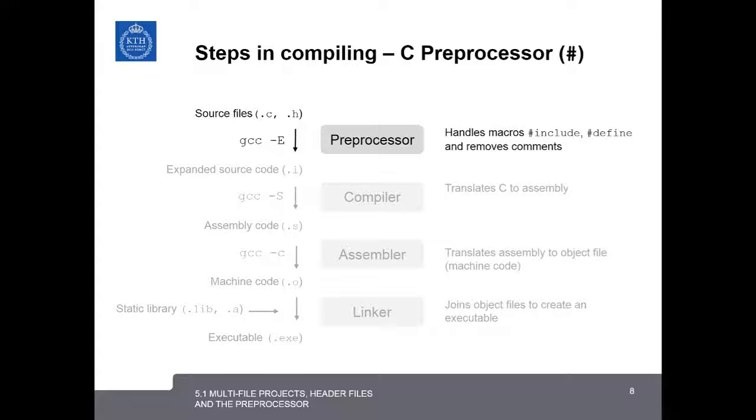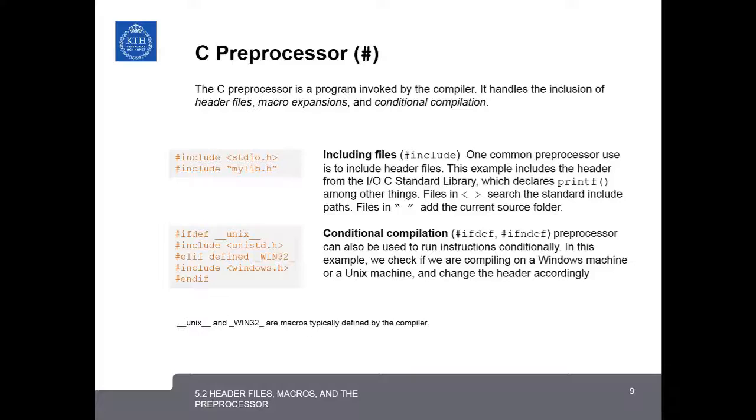If you recall from earlier lectures, the first step in the compilation process is the C preprocessor. The C preprocessor is very important to think about when we're talking about header files, because it's the part of the compilation process that includes header files into the source code. Anything that you see in a .c file or .h file with a hash symbol or pound, like you see here, is a preprocessor command. The C preprocessor is a program that's invoked by the compiler, and it handles the inclusion of header files, macro expansions, and conditional compilation.